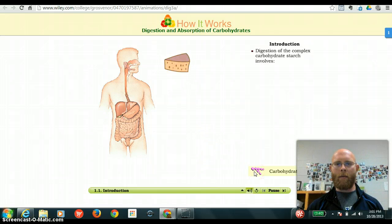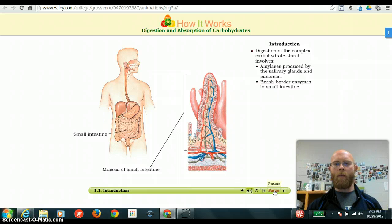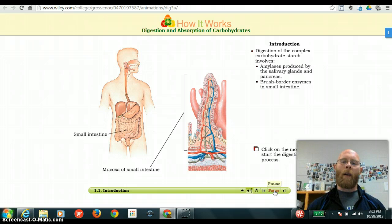Digestion of the complex carbohydrate starch involves amylases produced by the salivary glands and pancreas, and brush border enzymes in the small intestine. Okay, now time out. The enzymes are oftentimes called amylases, which would fall under a group of enzymes called carbohydrateases. Amylase comes from the word amylose. Amylose is the scientific name or biochemical name for starch, often found in potatoes and bread. So again, amylase breaks down amylose.